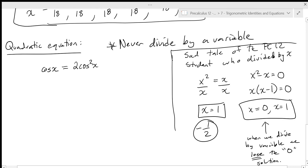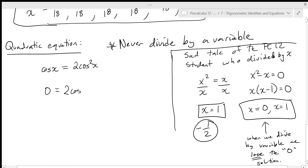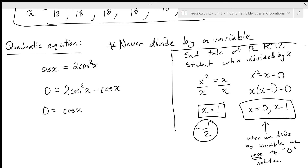So even though dividing looks right, you don't divide by variables when solving equations because variables can be zero. The only safe case is dividing by something like x squared plus one, which can never be zero. Instead, get everything on one side: zero equals two cosine squared x minus cosine x equals zero. Then factor out the common factor of cosine x to get: cosine x times (two cosine x minus one) equals zero. If this is complicated, you can substitute cosine x with A and factor zero equals two A squared minus A, then replace back.